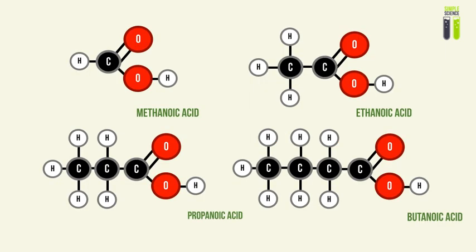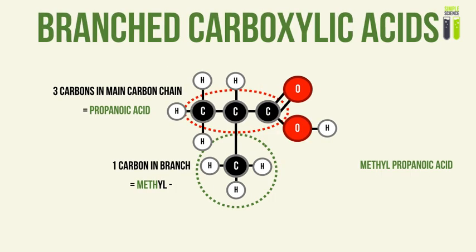Just like any other organic molecule, the name of the molecule is based on the number of carbons within it. So we have methanoic acid for 1 carbon and butanoic acid for 4, for example. And just like any other organic molecule, there are branched versions of it. In this case, we have a methyl branch attached to a main carbon chain of a propanoic acid molecule, giving the name methylpropanoic acid.